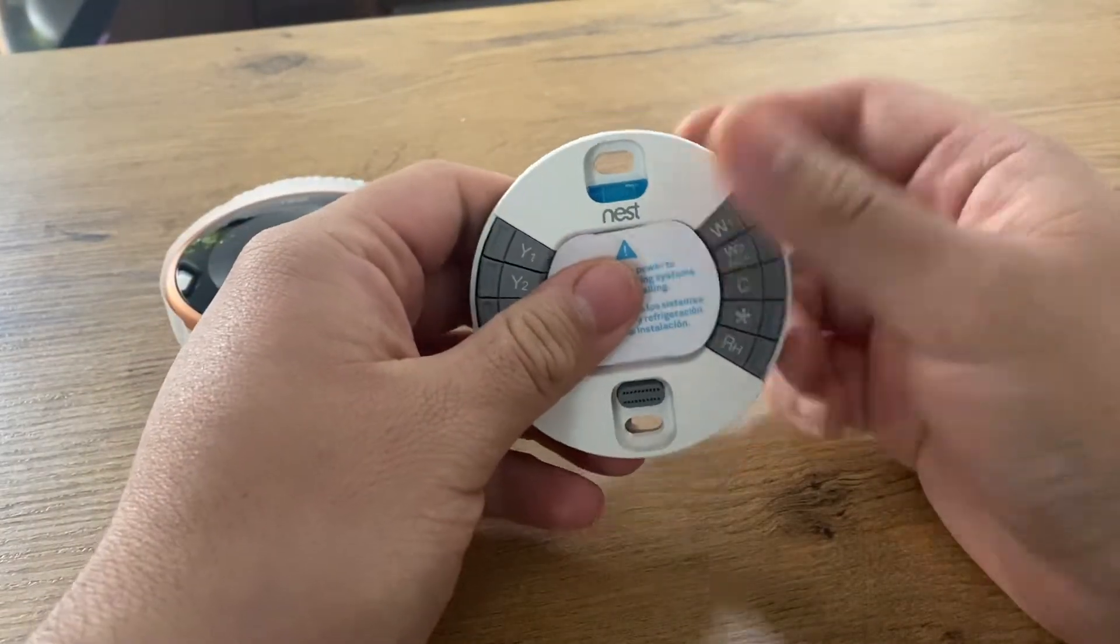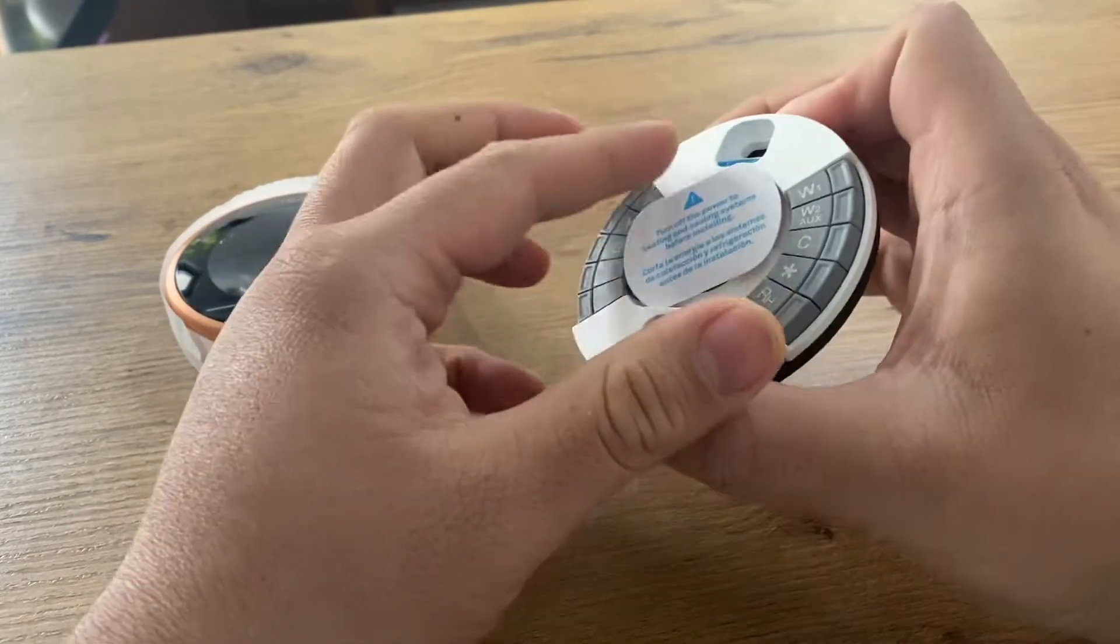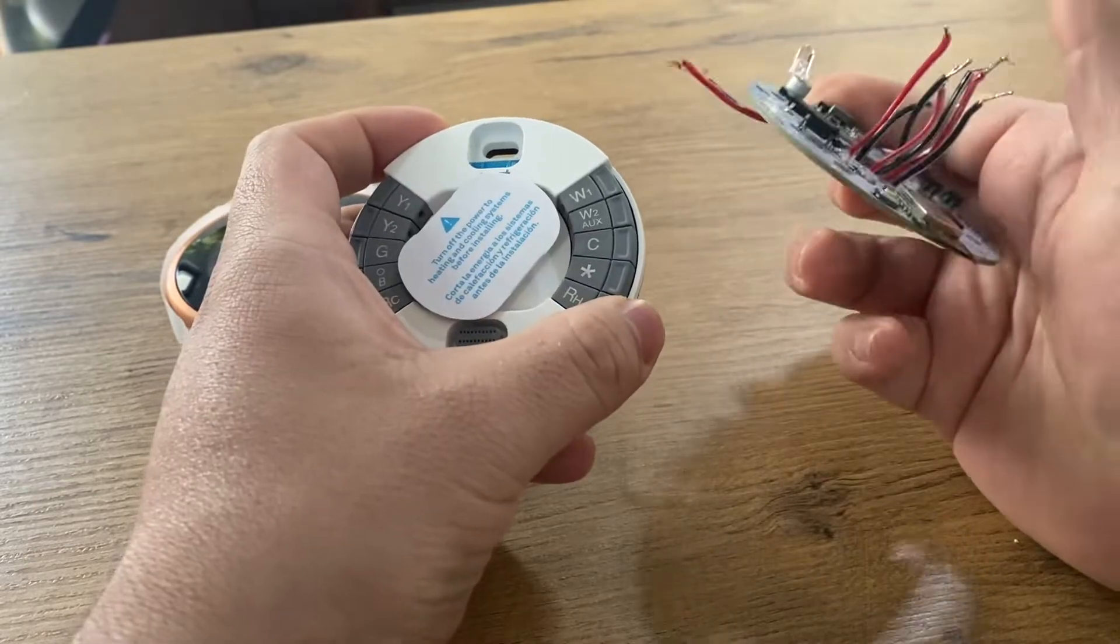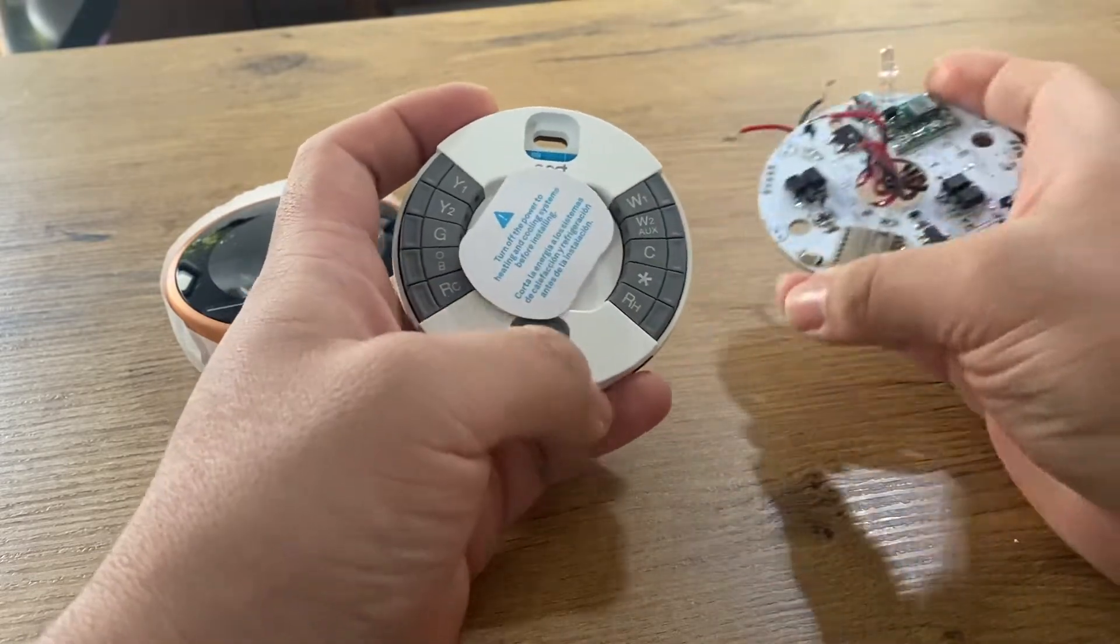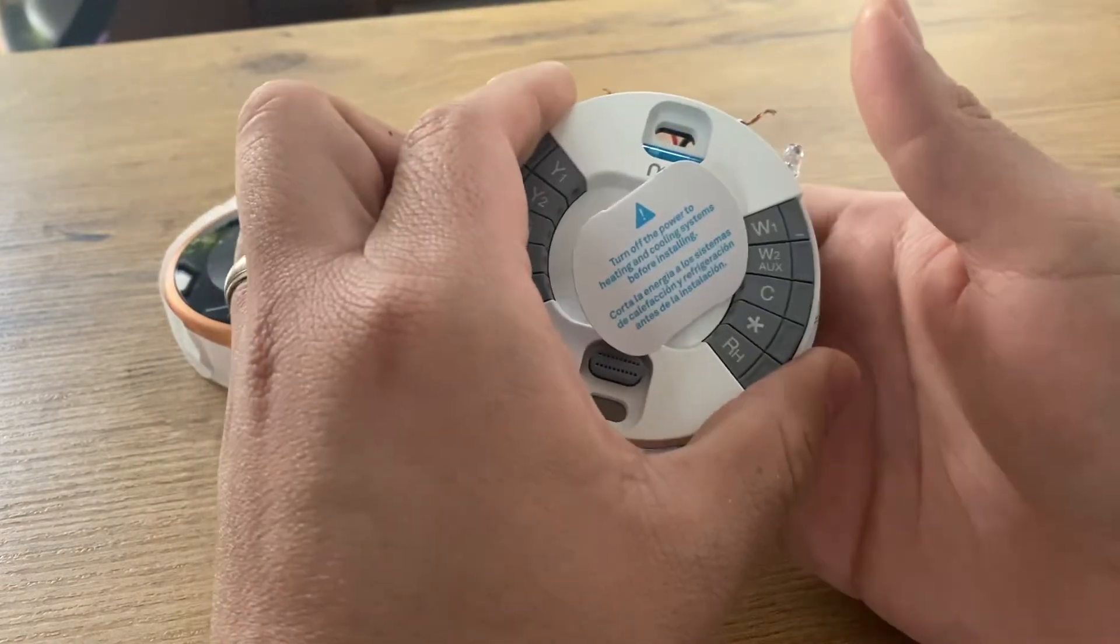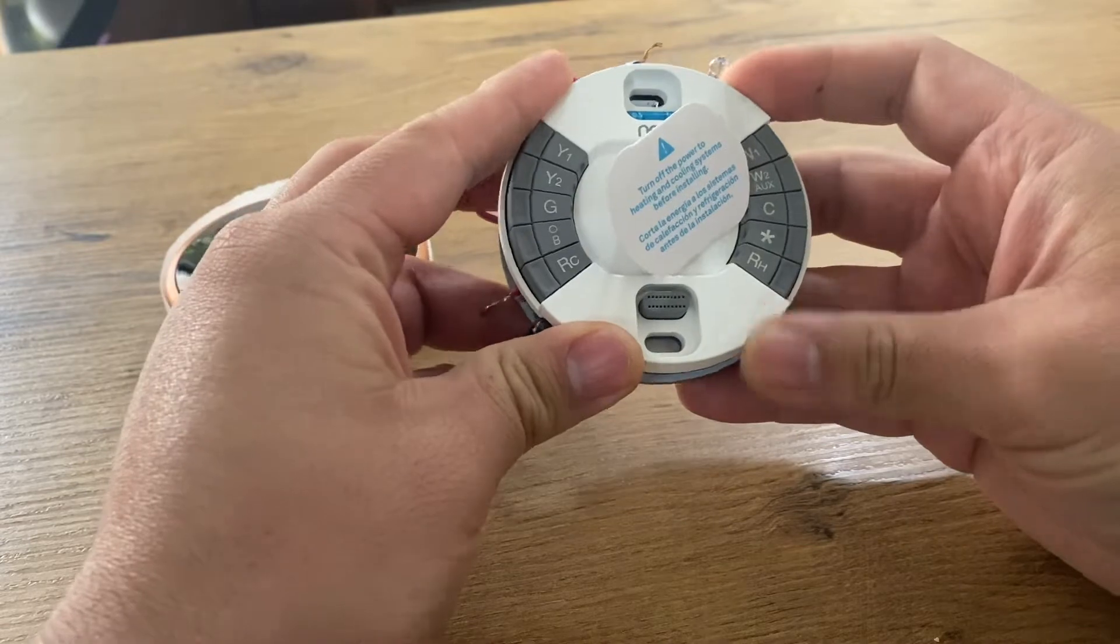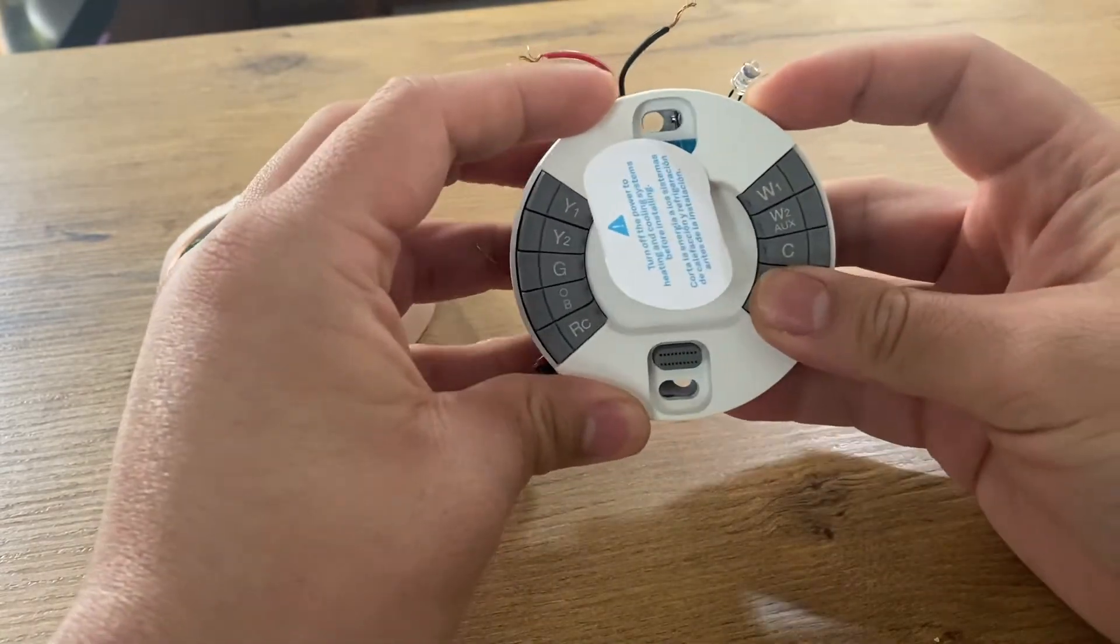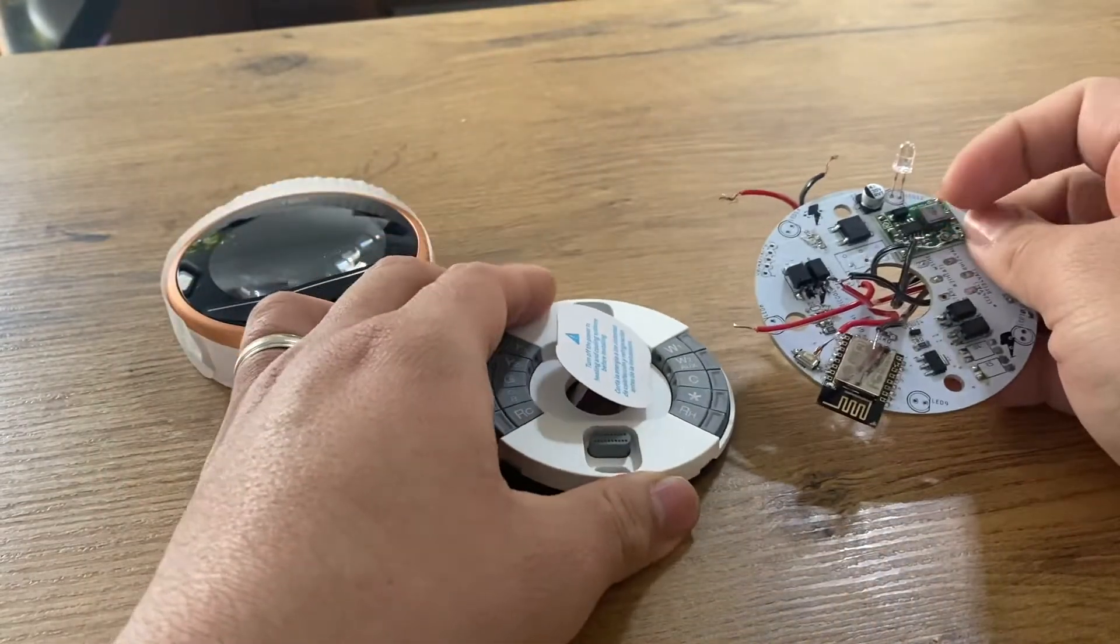So before you connect anything to the energy one, before you energize anything, you will need to wire this. You will need to connect all these wires to the back plate of the Nest thermostat. So the final result is going to look something like this. As you can see, it fits perfectly in the back of the back plate and it is in the same position as the exposure.